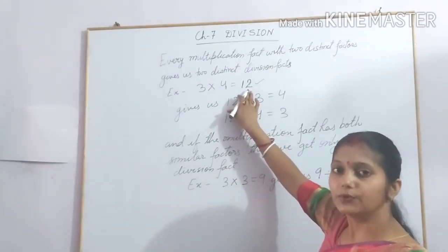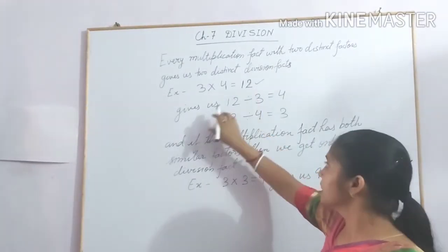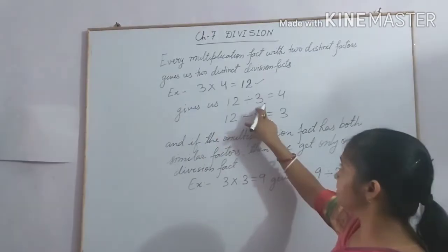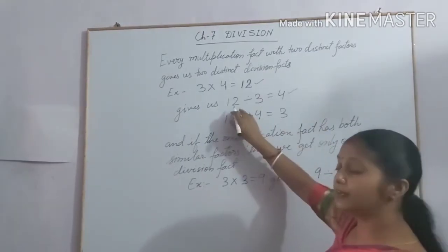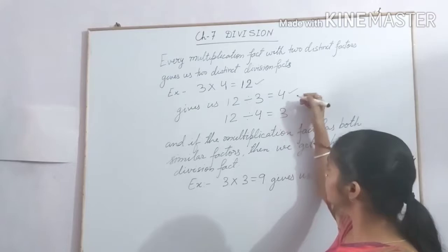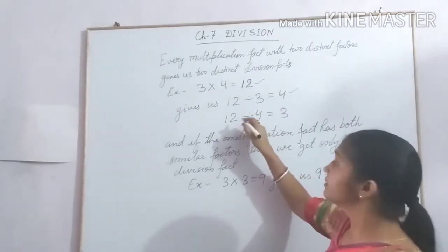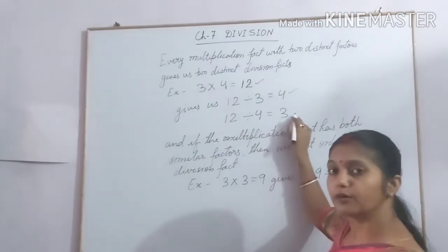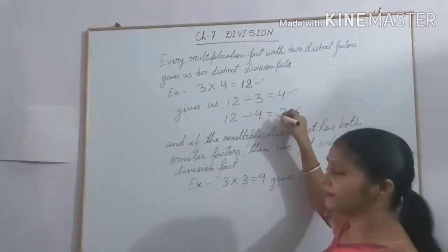So it gives us 2 distinct division facts. The first one is 12 divided by 3 equal to 4. When we divide 12 by 3 we get 4 and 12 divided by 4 equal to 3. These two are division facts.